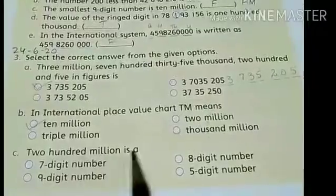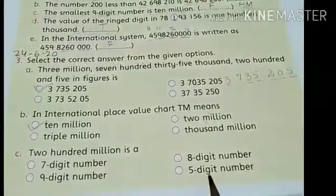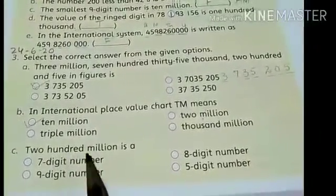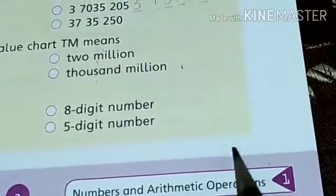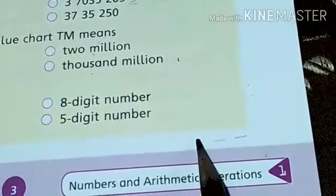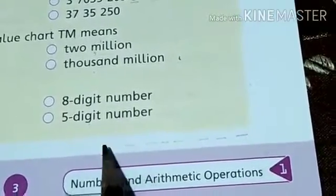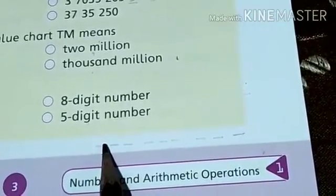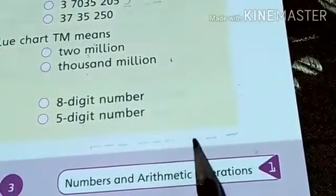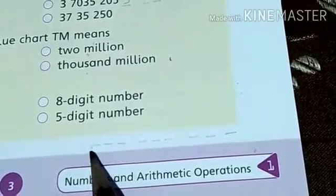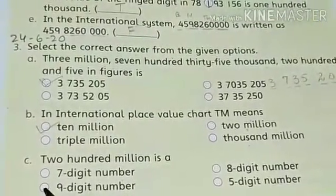Part C: 200 million is a 7-digit number, 9-digit number, 8-digit number, or 5-digit number? First, make the place value of 200 million: 100,000; 1 million; 10 million; 100 million. Counting the digits: 1, 2, 3, 4, 5, 6, 7, 8, 9 — it has 9 digits. Now tick the correct answer, which is 9-digit number.